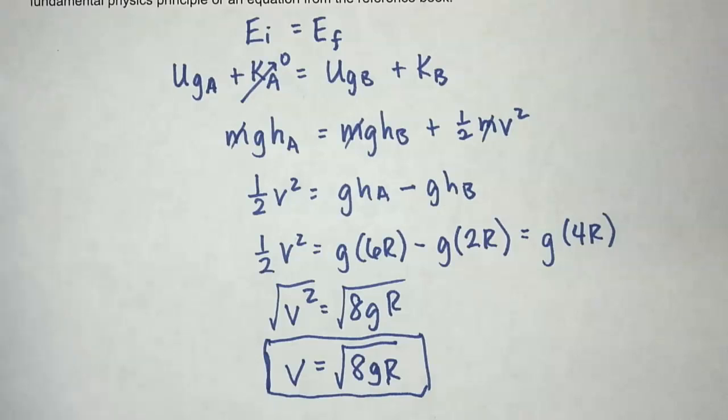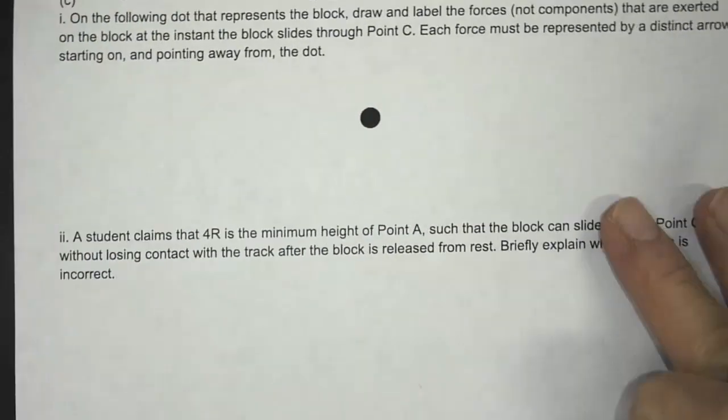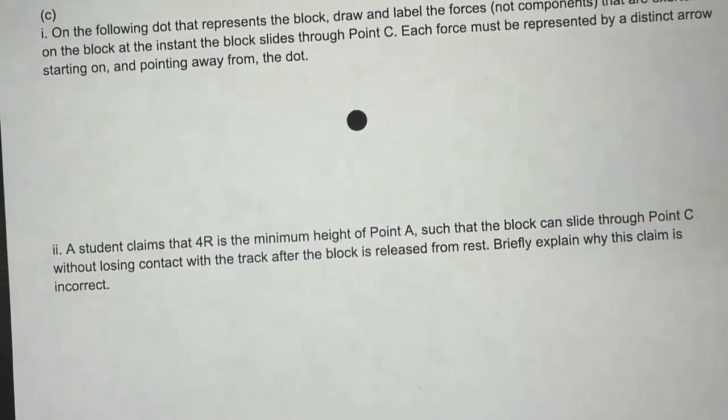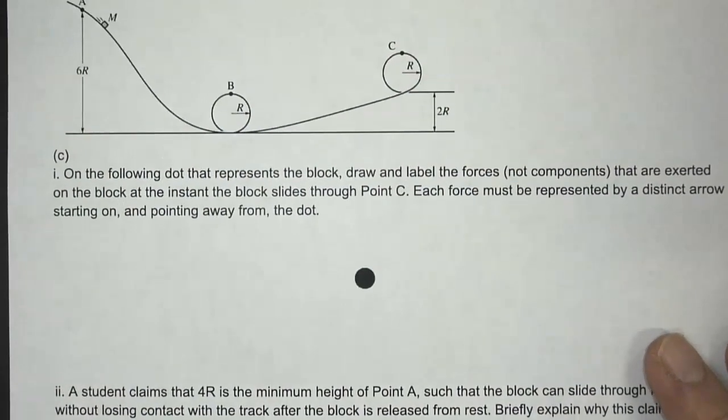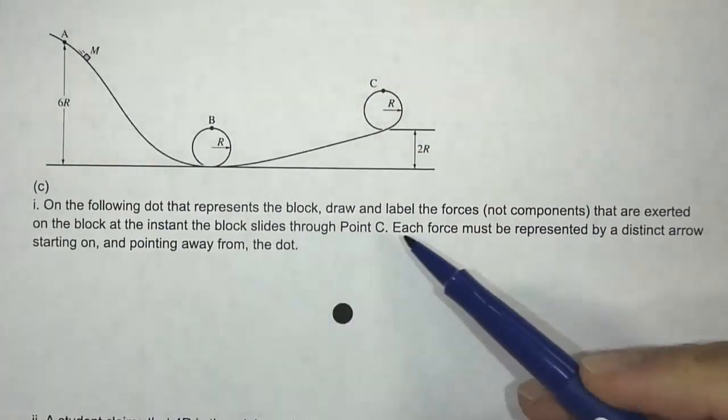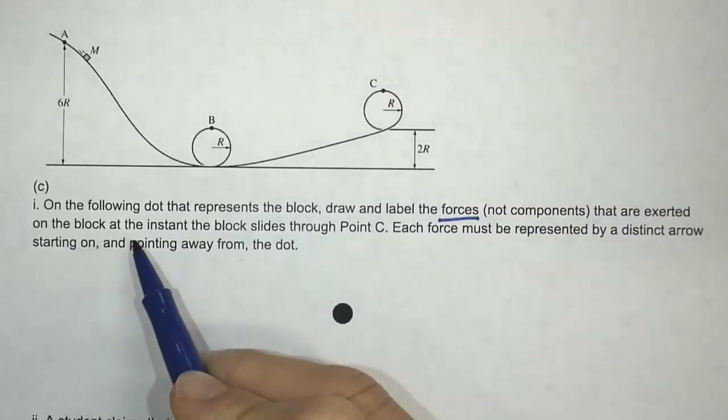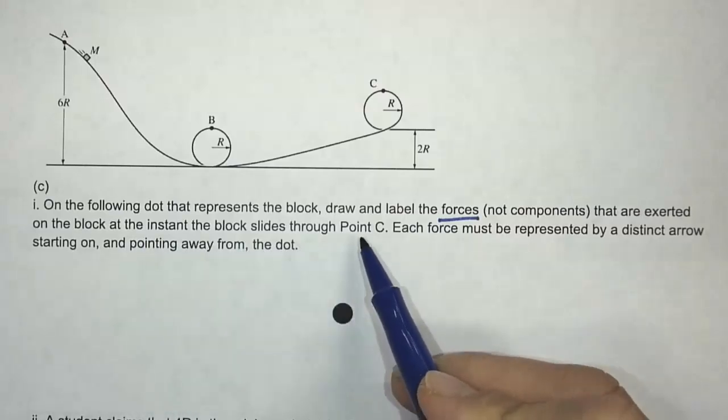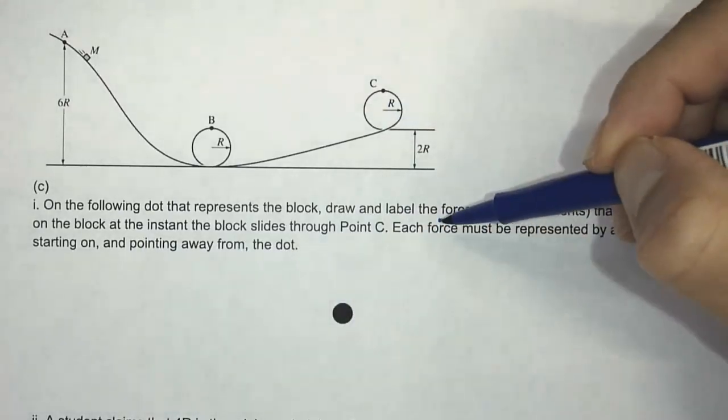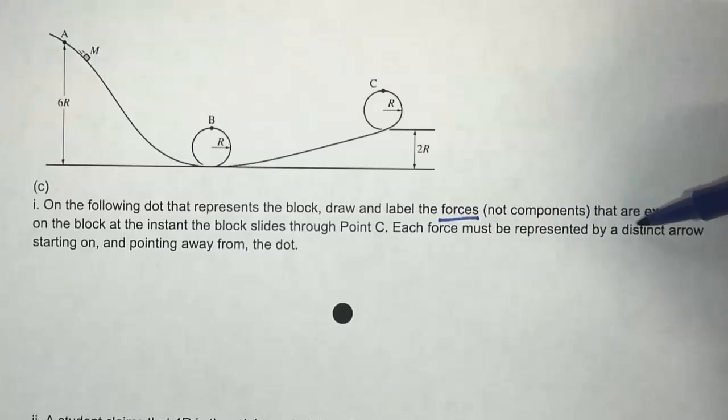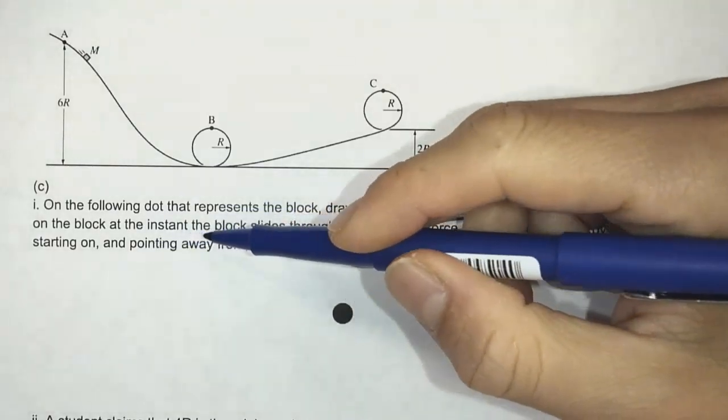So the next part, the next question is a force question. On the following dot that represents the block, draw and label forces, not components, that are exerted on the block at the instant the block slides through point C. So now we're looking at this point here.